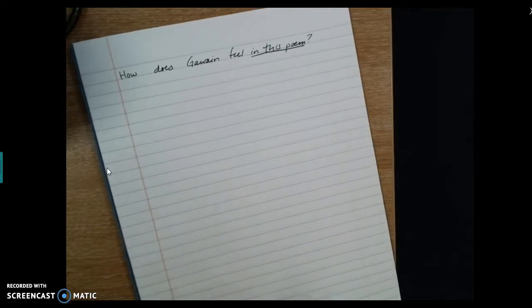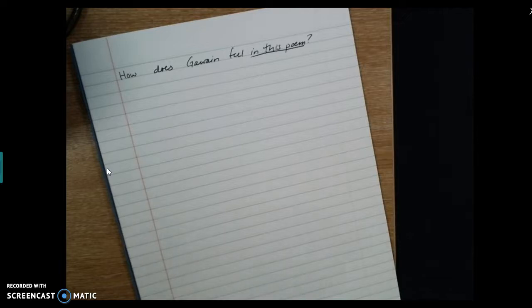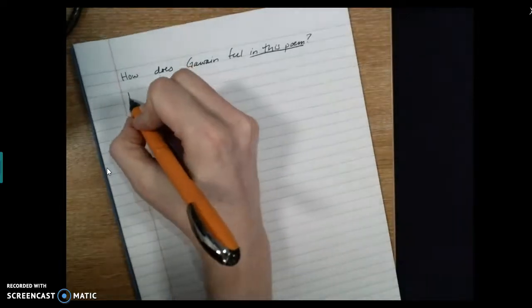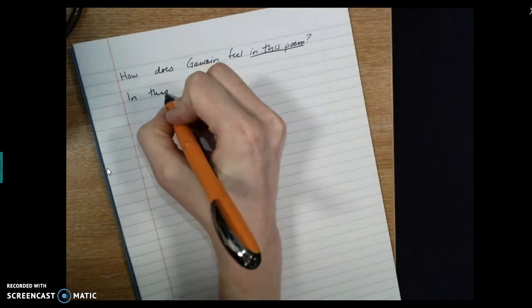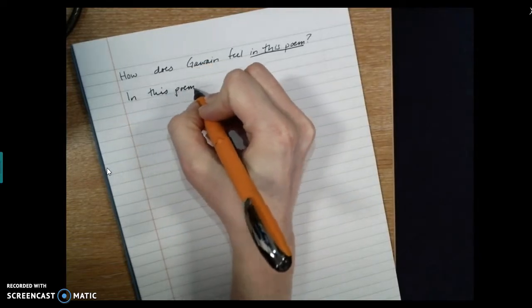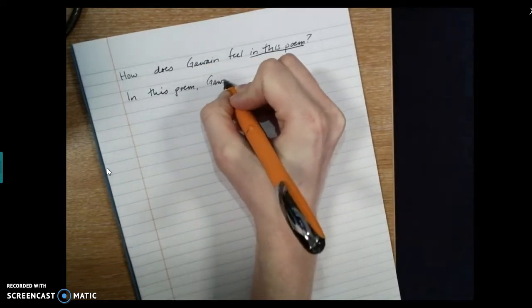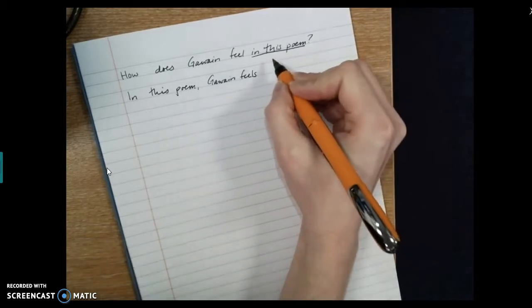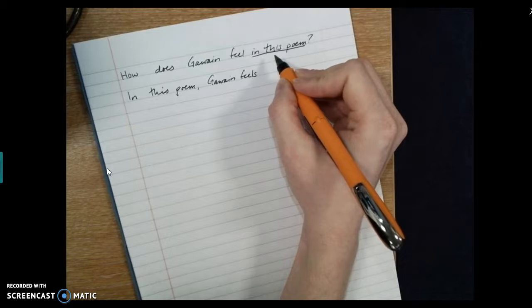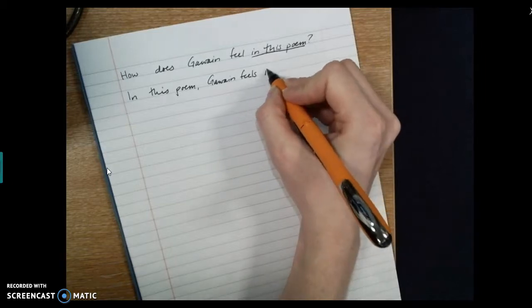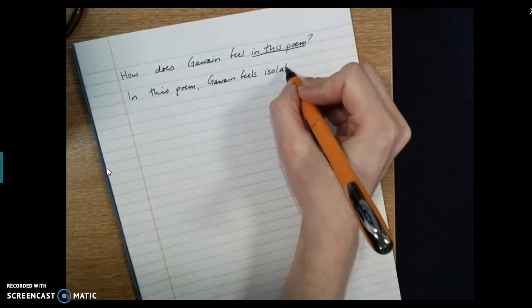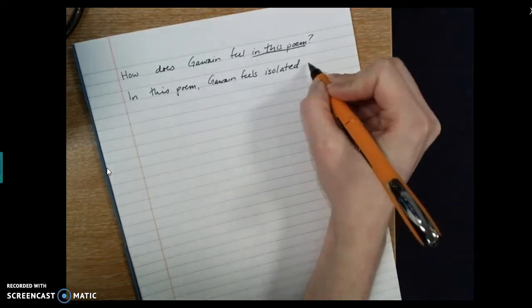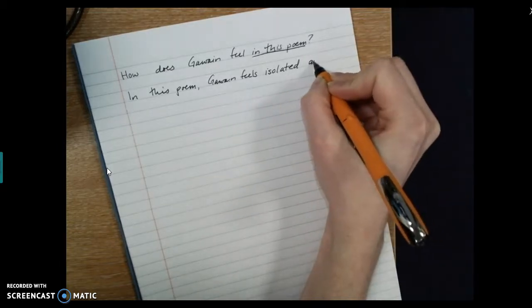So now I've got to start off. The way I always start off when I'm writing about, in response to a question, is to answer it. So I'm going to say, in this poem, Gawain feels. And what are some of the words that we used? How does he feel? Isolated. And what was the other word we came up with? And lonely.